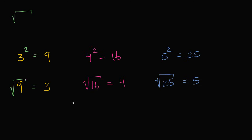Now, I know there's a nagging feeling some of you might have. If I were to take negative three and square it, I would also get positive nine. Likewise, negative four squared is positive 16, and negative five squared is positive 25. So why can't the square root of nine be positive three or negative three? Depending on who you talk to, that's actually a reasonable thing to think about. But when you see a radical symbol like this, people usually call this the principal root.